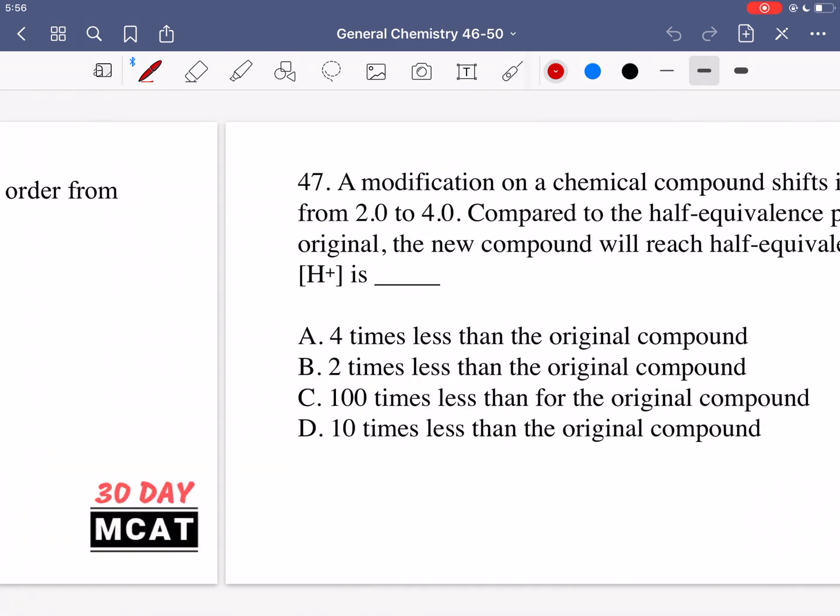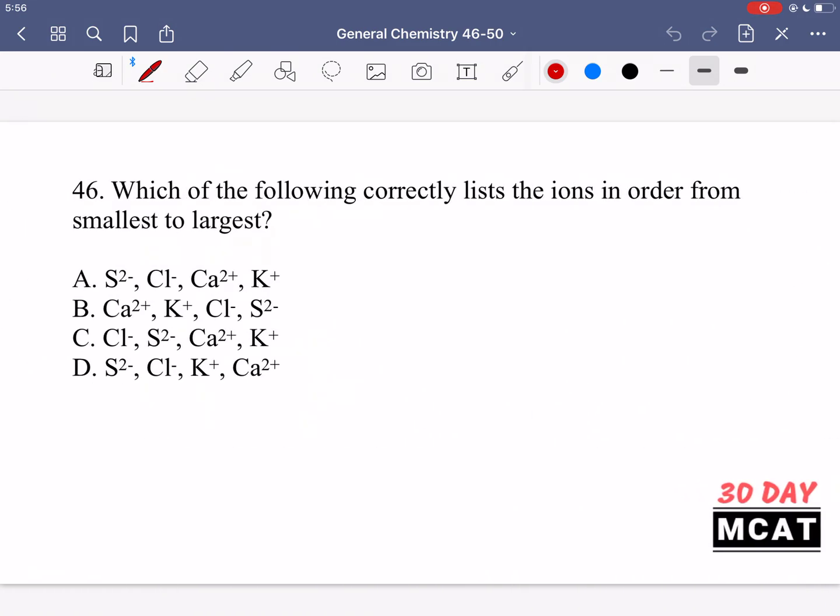Now let's go through the questions together. In question 46 we're asked which of the following correctly lists the ions in order from smallest to largest. So we are talking about the atomic periodic table trend in which we see atomic size increase. If we had a general periodic table, keep in mind that if we go down the periodic table and to the left, atomic size increases.